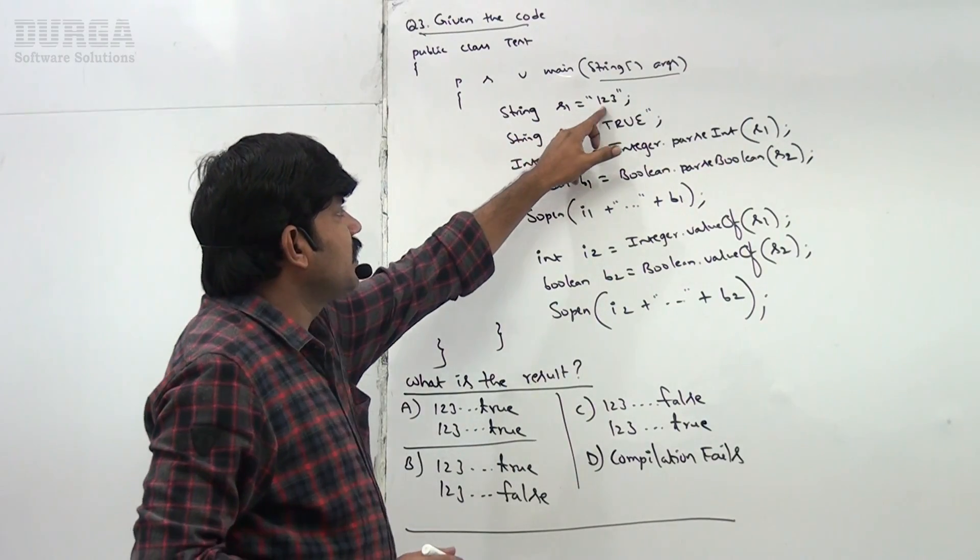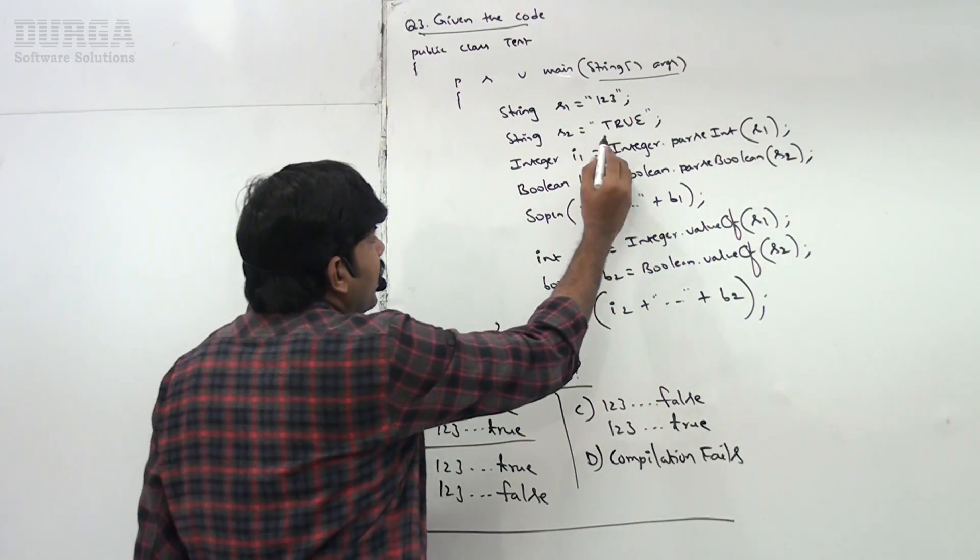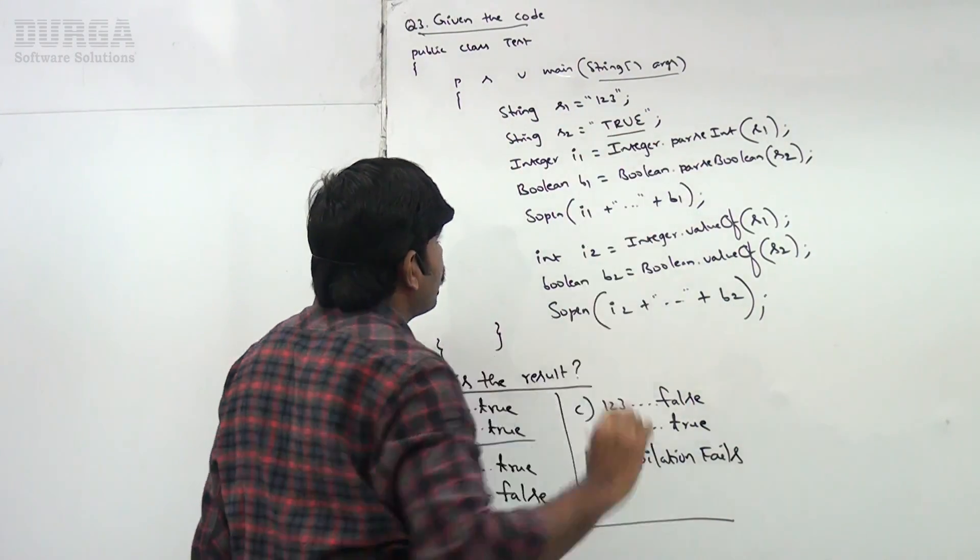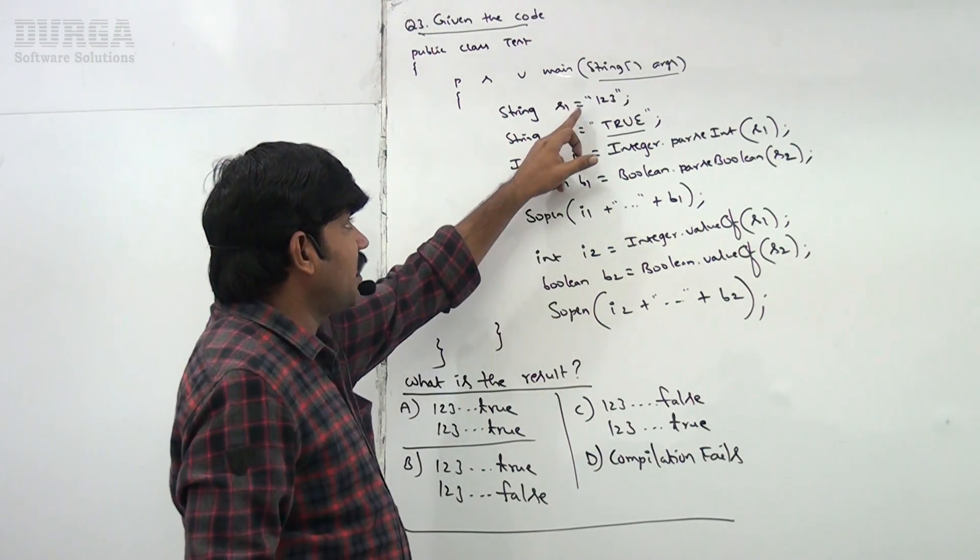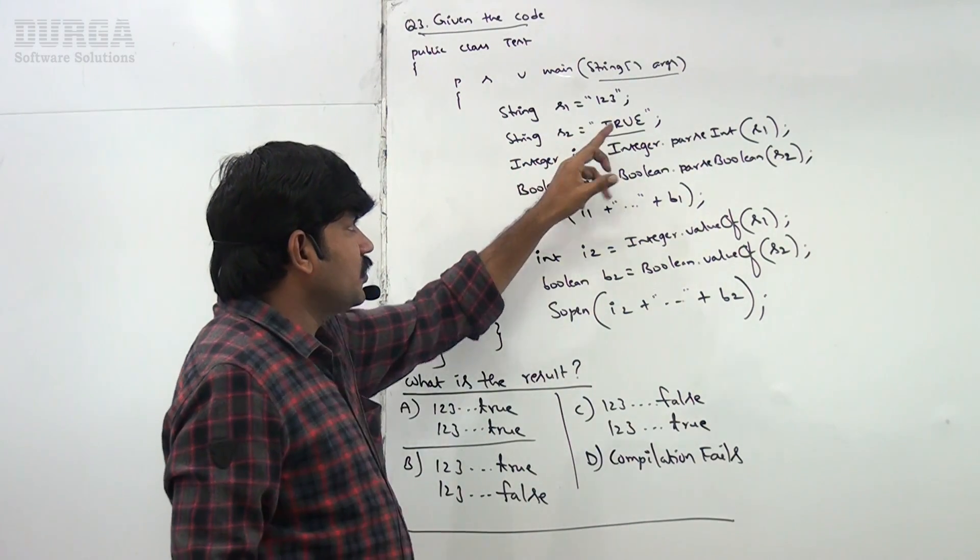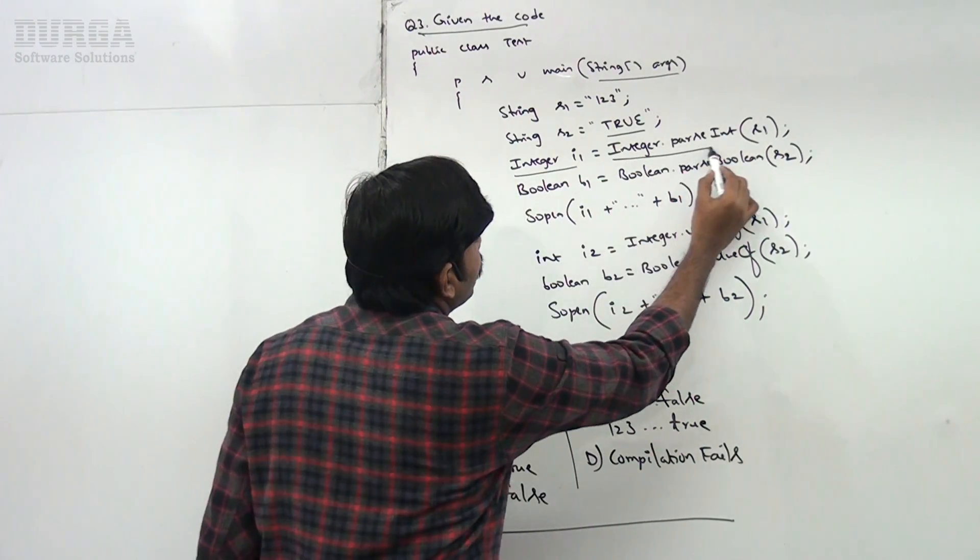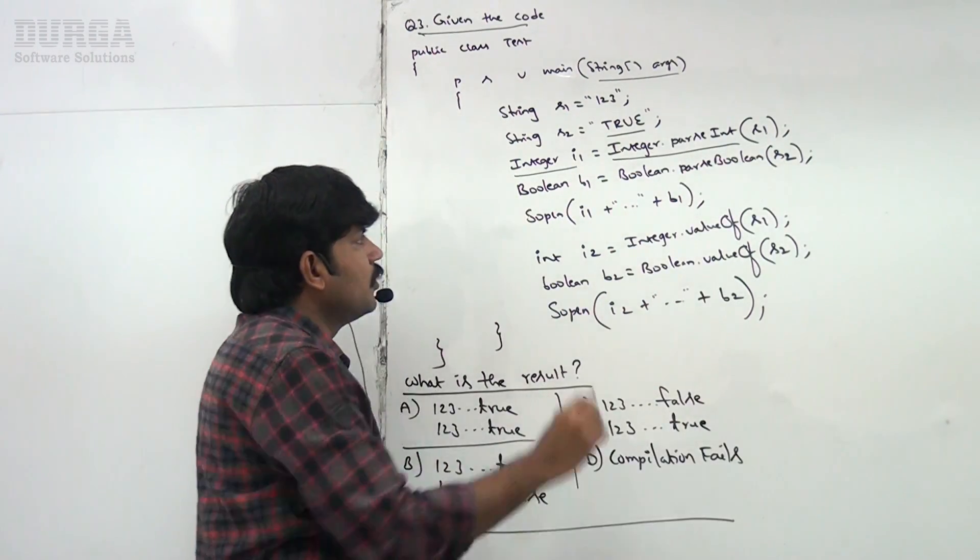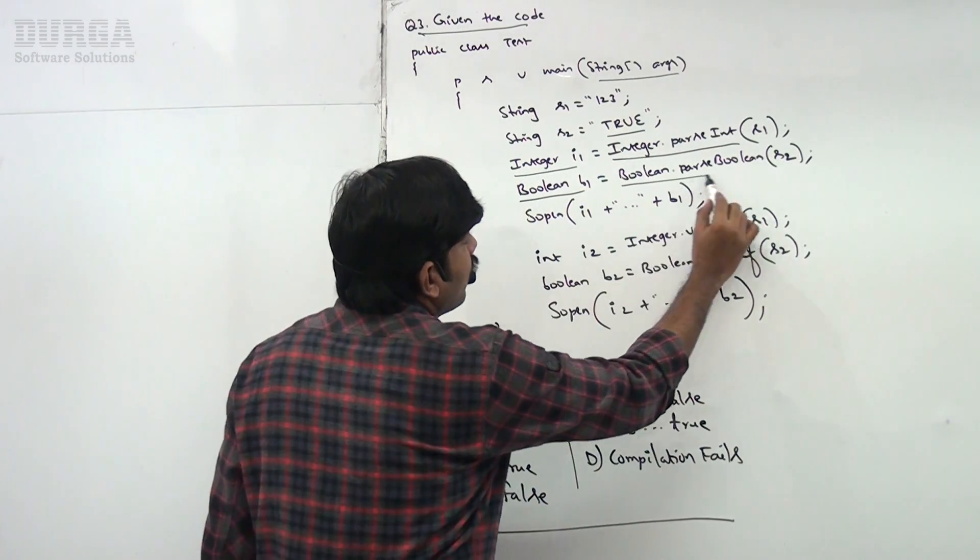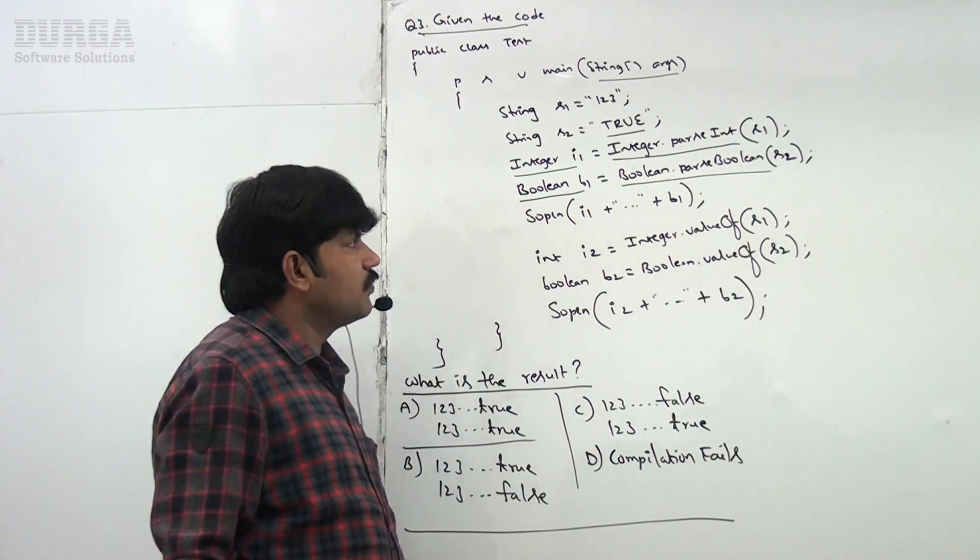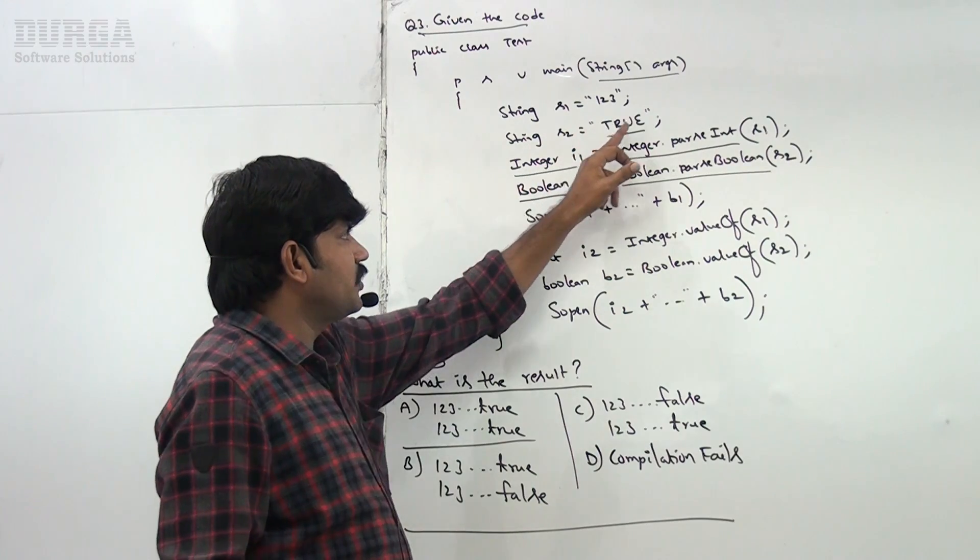String s1 is equal to "123", String s2 is equal to "TRUE". Now observe very carefully sir, s1 is "123", string s2 is "TRUE". Integer i1 equals Integer.parseInt(s1), Boolean b1 equals Boolean.parseBoolean(s2). s1 is "123", s2 is "TRUE".